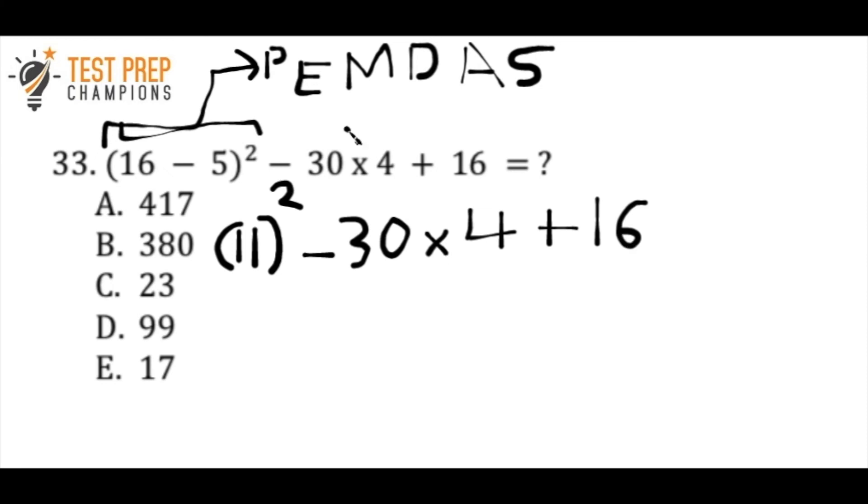So now, what would we do next? We have to go to the next step of PEMDAS, which is our E. The E stands for either exponents or square roots. And we don't have any square roots, but we do have an exponent. So what is 11 squared? Well, 11 squared is just 11 times 11. And 11 times 11 is 121. So I can rewrite that as 121. So rewriting this gives me 121 minus 30 times 4 plus 16. So we've got parentheses and exponents and square roots done.